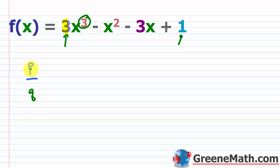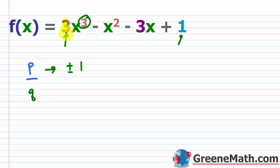If p/q is a rational number in lowest terms — meaning no common factor other than 1 between p and q — and it's a zero of the polynomial f(x), then p must be a factor of the constant term and q must be a factor of the leading coefficient. Here p divides 1, so p = ±1, and q divides 3 (a prime), so q = ±1 or ±3.